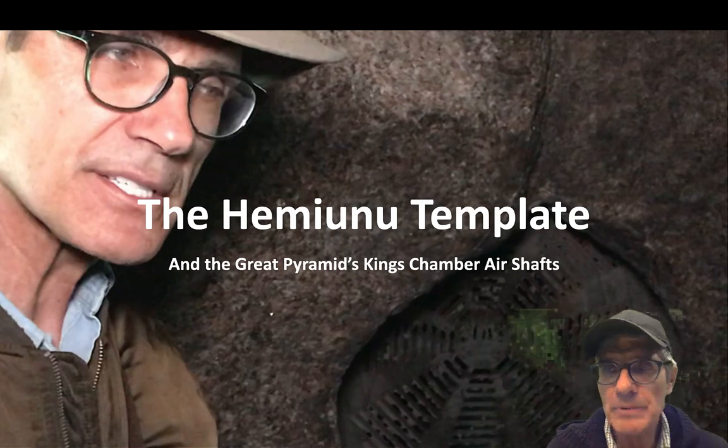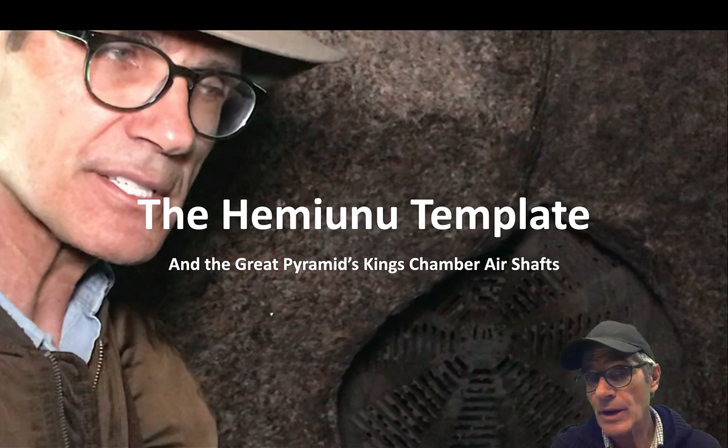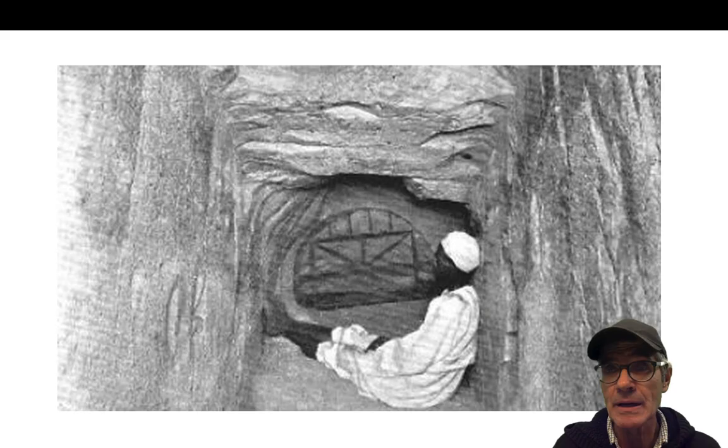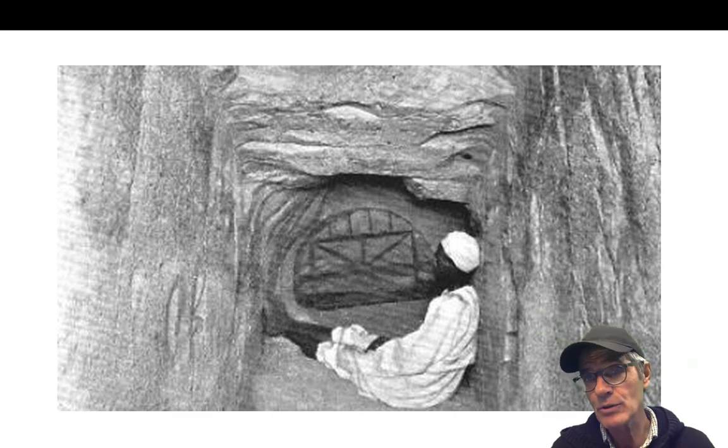I'm going to talk about the Hemiunu template that I deciphered on the Great Pyramid, named after the architect of the Great Pyramid. This is me in front of the South King's Chamber air shaft. It's one of the four - the two in the King's Chamber, the two in the Queen's Chamber - that's shaped so differently, like a hexagon shape. Someday I'll do a program on that, very interesting. But I want to look at these air shafts and the Hemiunu template.